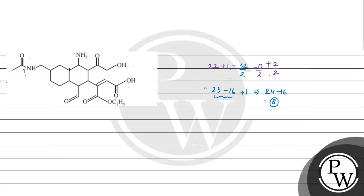Now let's see the functional groups. This is the first functional group — this is amine. This is carbonyl. This is the fourth. OH — fifth — carboxylic acid. Sixth, we have ester. And this is the seventh — aldehyde. We have alkyne. So how many functional groups do we have? Eight functional groups.